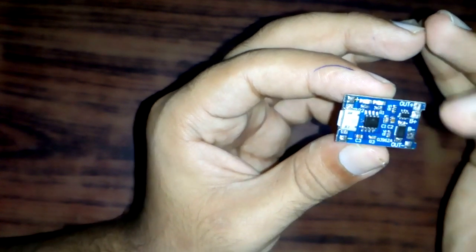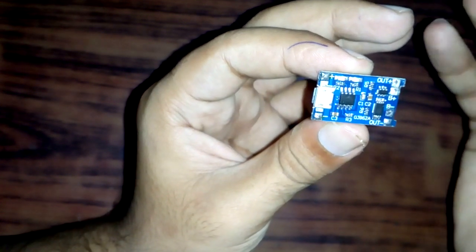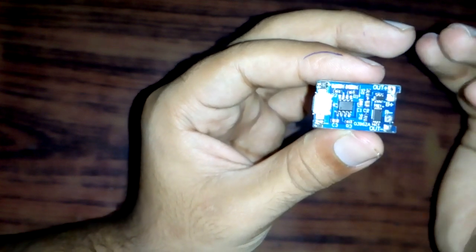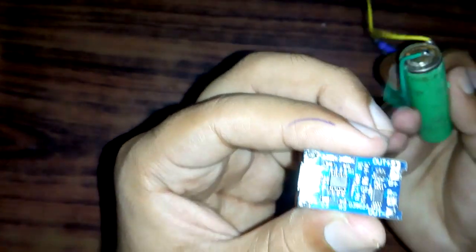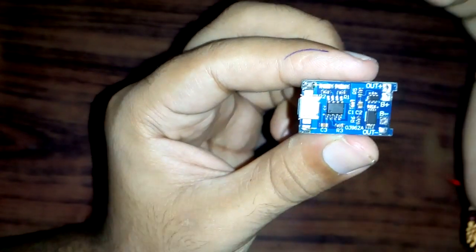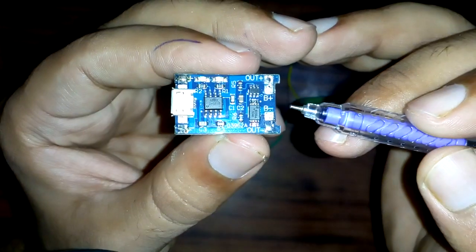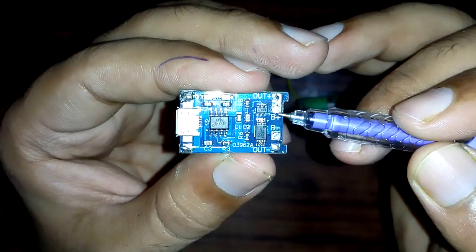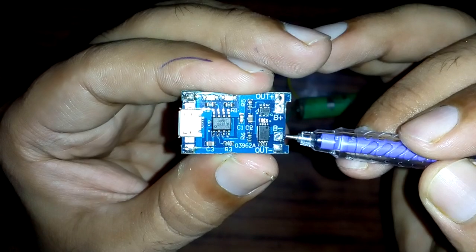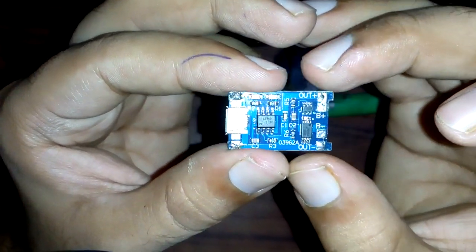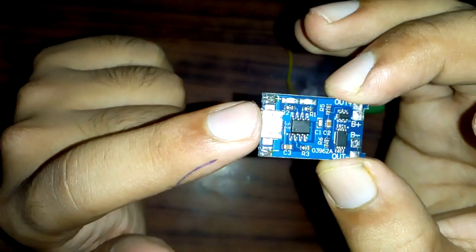There are two terminals here, plus and minus, which are in plus and in minus, and a micro USB. First of all, you need to connect a battery to this module. We will connect an 18650 single cell battery to B plus terminal and B minus terminal.